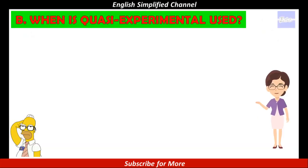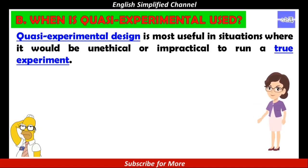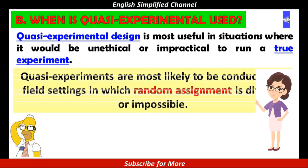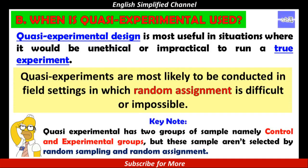Now let's continue to Part B. When is quasi-experimental used? Quasi-experimental design is most useful in situations where it would be unethical or impractical to run a true experiment. In other words, quasi-experiments are most likely to be conducted in field settings in which random assignment is difficult or impossible. Bear in mind, quasi-experimental has two groups of sample, namely control and experimental groups, but this sample isn't selected by random sampling and random assignment.